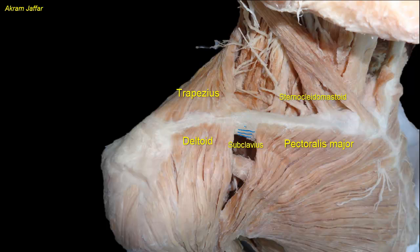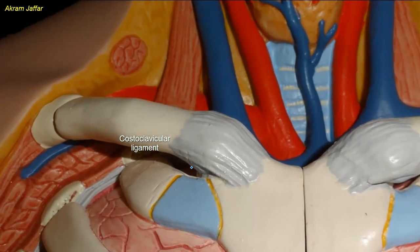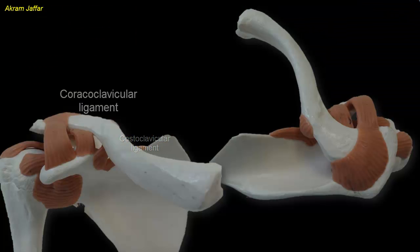Fracture of the clavicle is common, and the break is always between the costoclavicular and coracoclavicular ligaments. The costoclavicular ligament is a very strong ligament connecting the medial end of the clavicle with the first costal cartilage. The coracoclavicular ligaments are two strong ligaments connecting the lateral end of the clavicle with the coracoid process of the scapula.